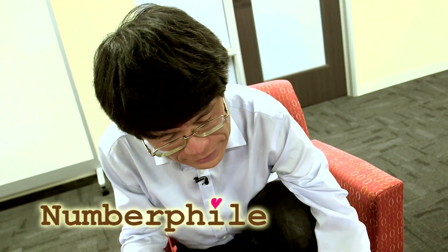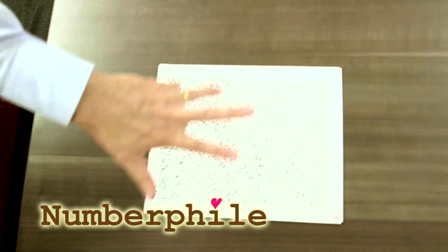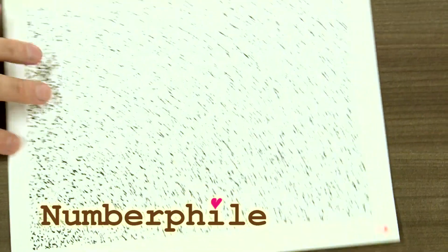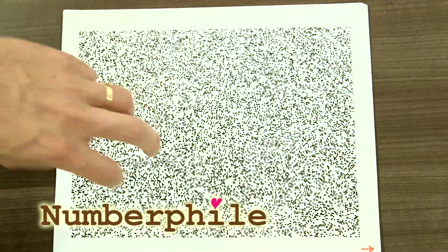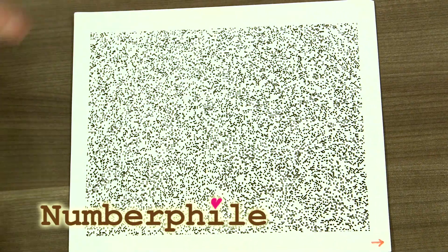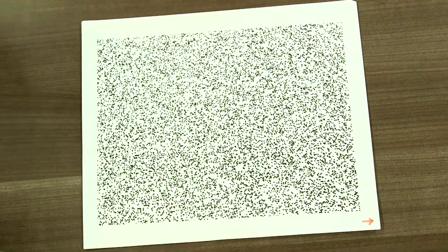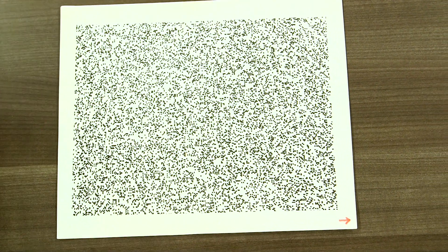If you ask real experts in probability, they'll say this is not random because it's far too uniform. Really Poisson, that kind of thing would have more gaps and so forth, but it's random enough. And what I'm about to show you works with any sufficiently random dots.